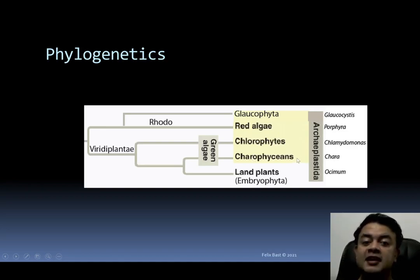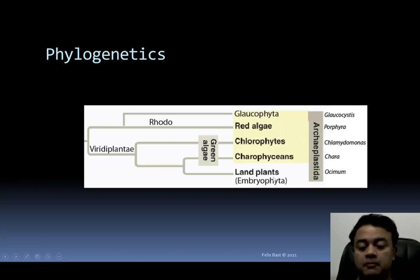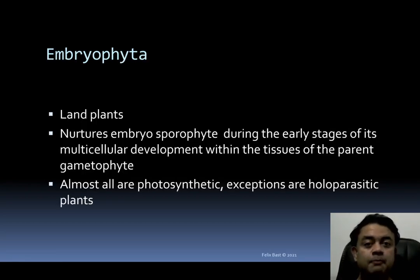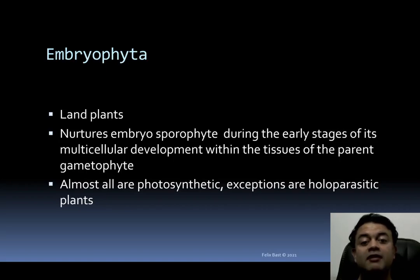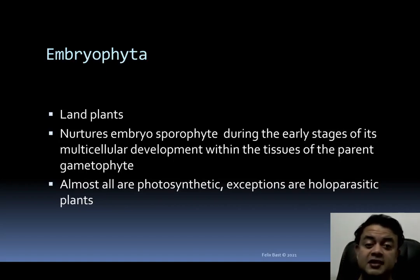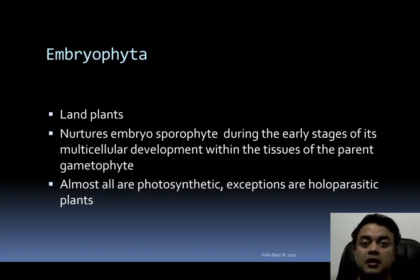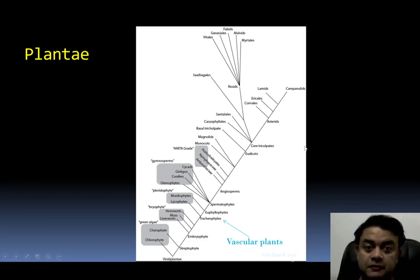Charophycinae example: Chara vulgaris, a model organism. Land plants example: Ocimum or any land plant — all are embryophytes. Embryophyta is a monophyletic group. The name 'embryophyta' comes from the fact that the sporophytic embryo is nurtured during early multicellular development within the tissues of the parent gametophyte. Almost all embryophytes are photosynthetic, with exceptions being parasitic plants.